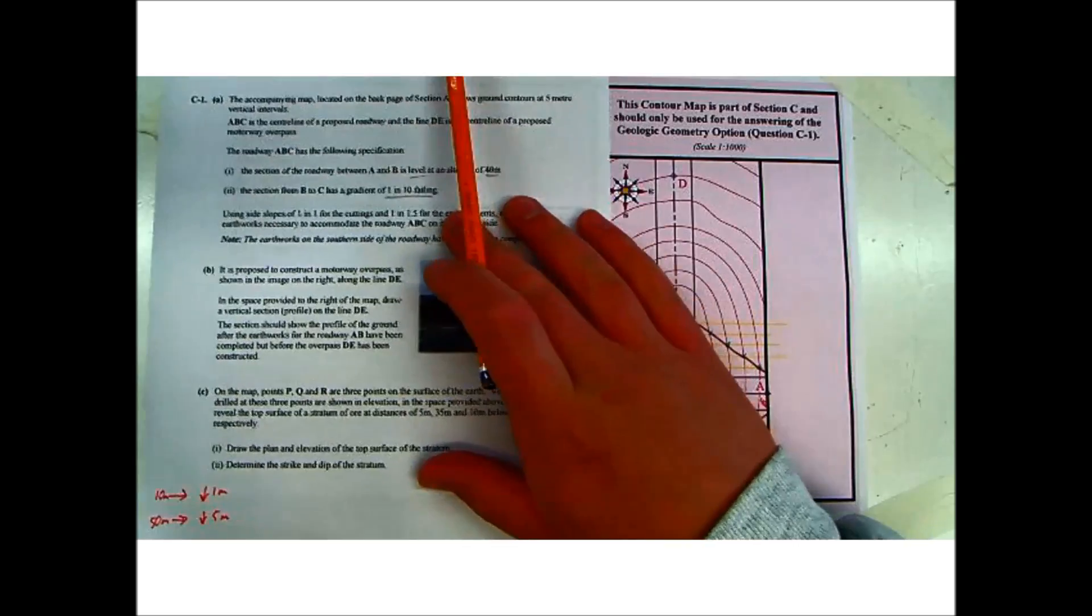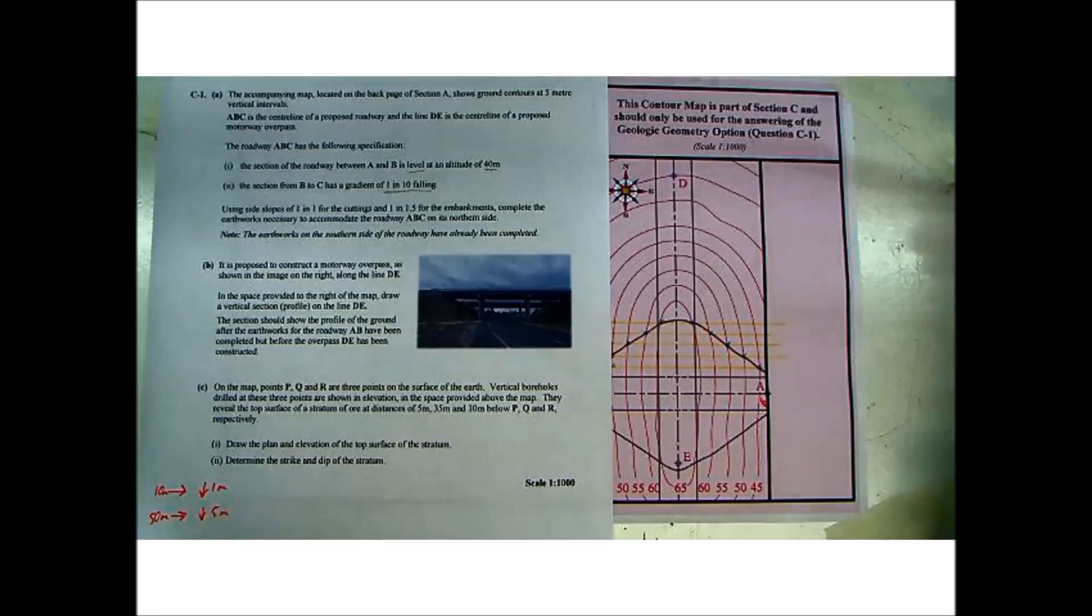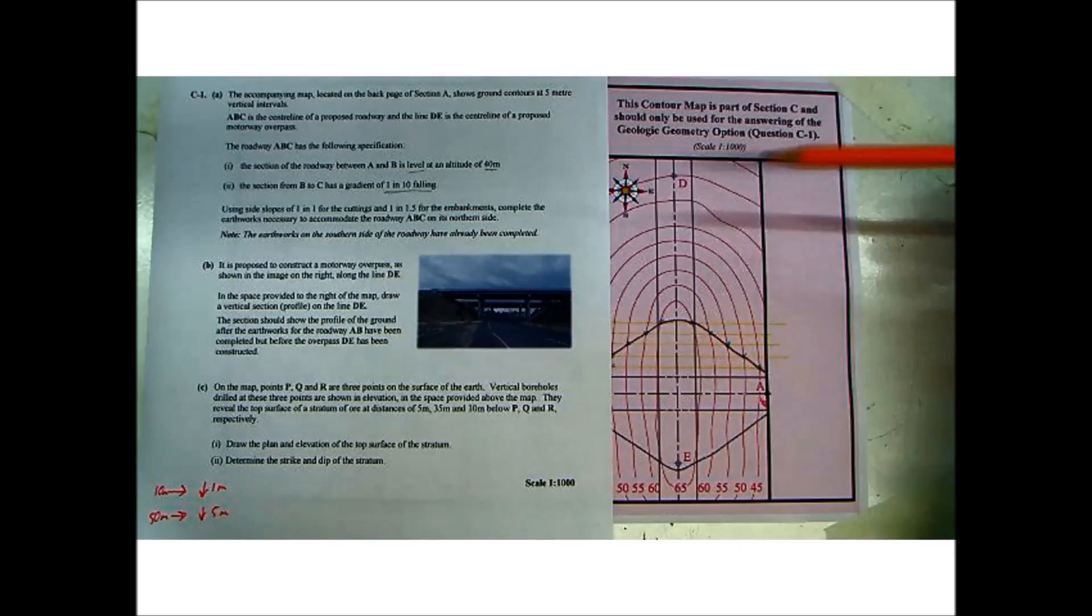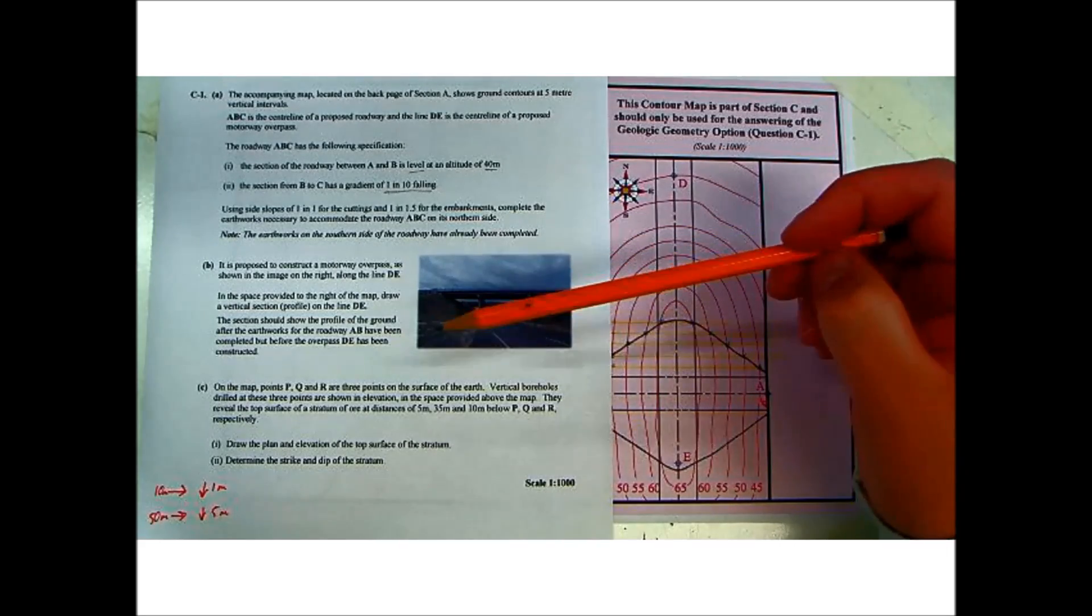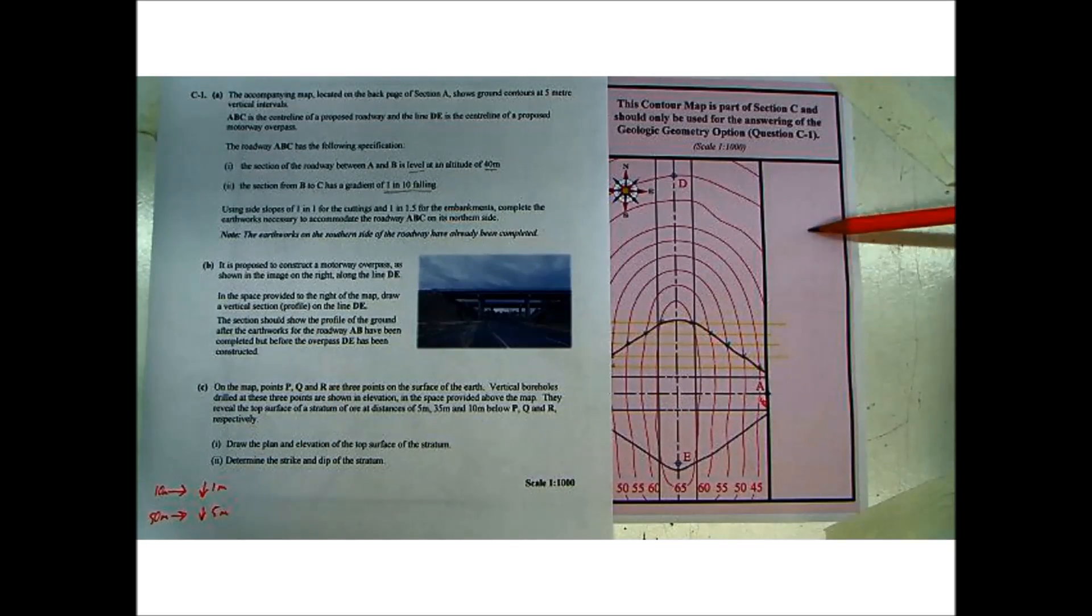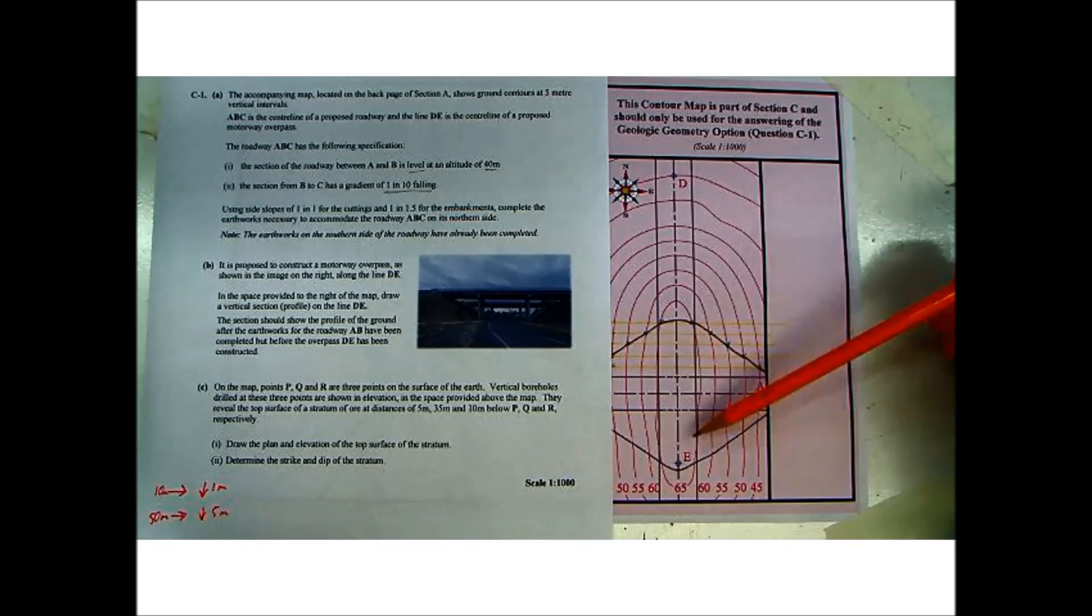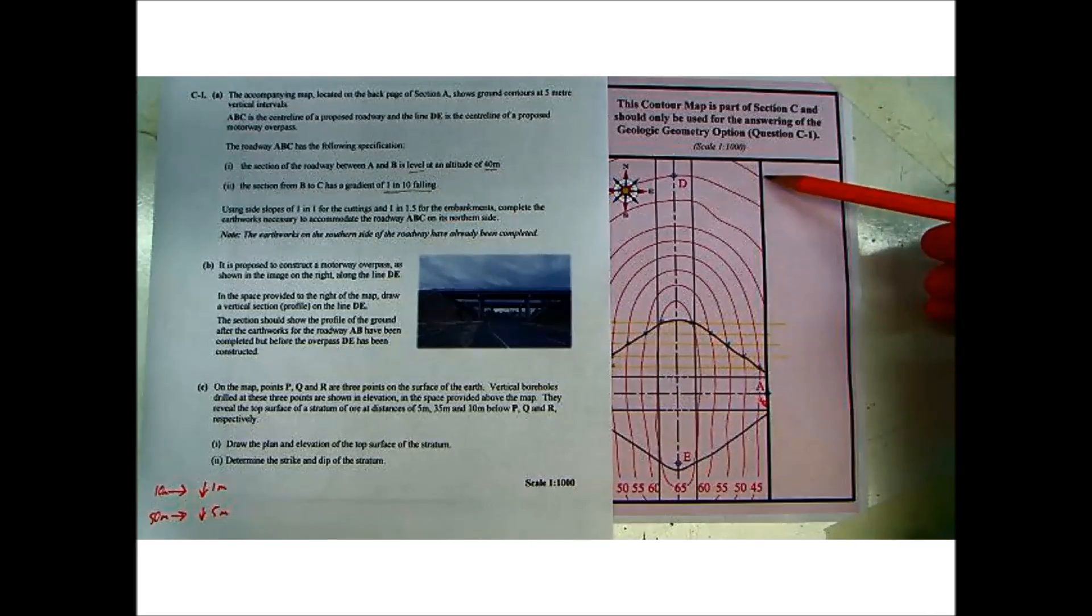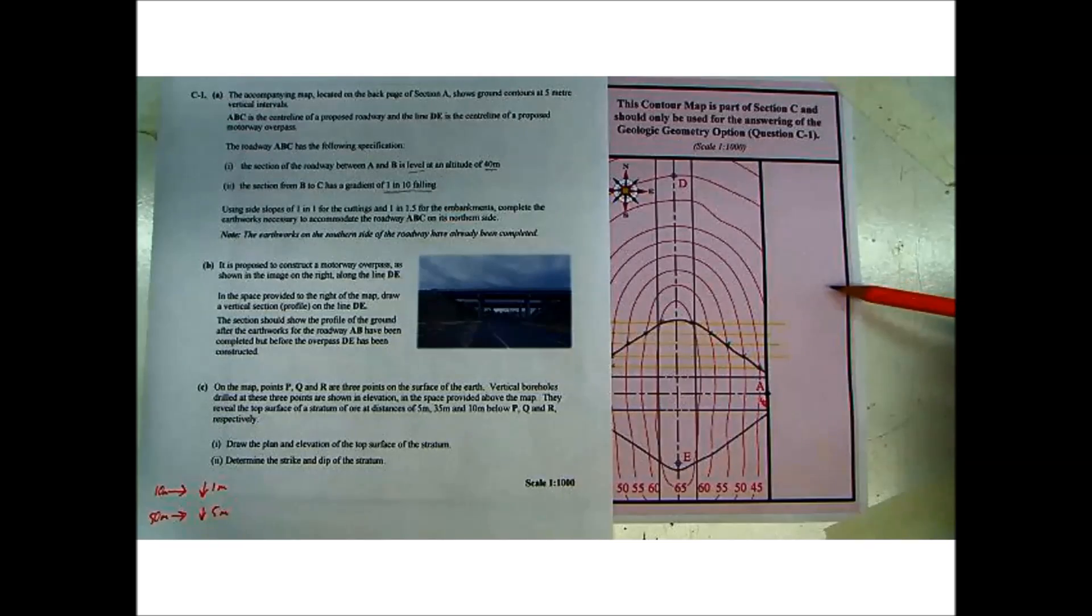So again let's read through it. Part B: it is proposed to construct a motorway overpass as shown in the image on the right along the line DE. Here's our image of an overpass and there's our line DE showing you the plan of the overpass. In the space provided on the right of the map, draw a vertical section profile of the line DE. They're giving a little bit of space here and they want you to draw the profile of DE in that space, showing all the contours. The section should show the profile of the ground after the earthworks of the roadway AB have been completed, but before the overpass DE has been constructed. So what I want to show here is basically the contours of the land along the line DE after the earthworks are done.